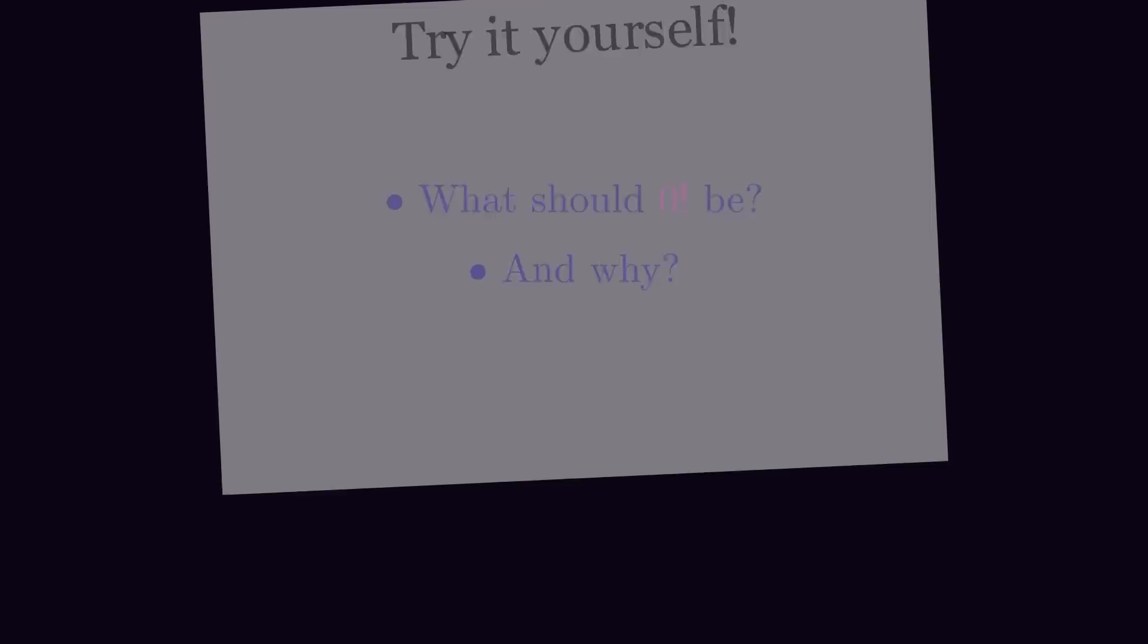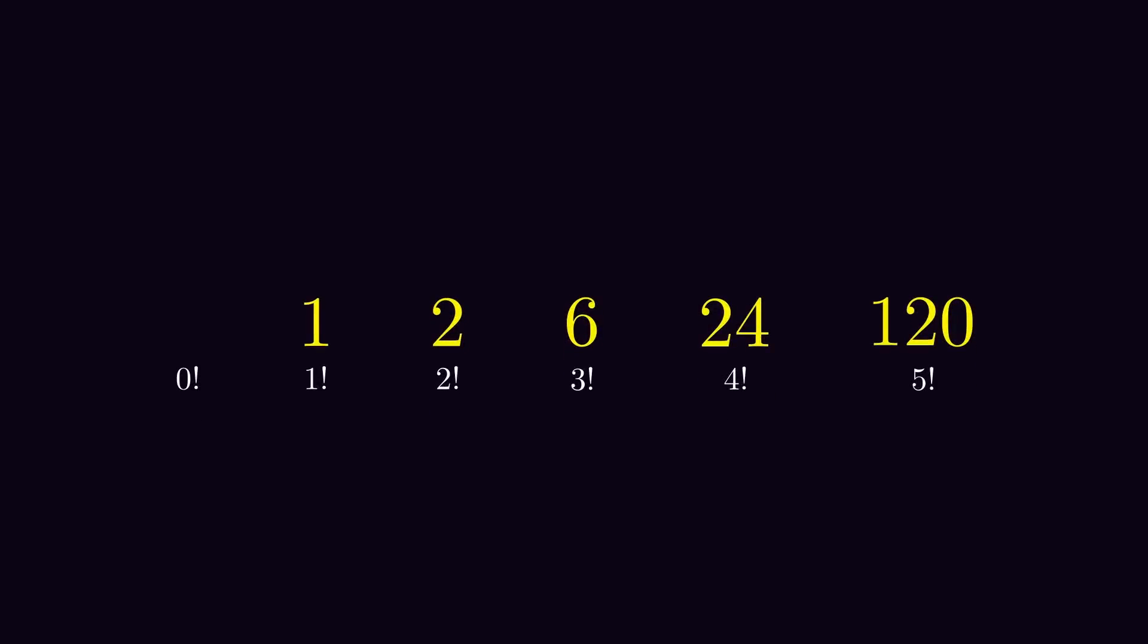If you take a look at the pattern the factorial makes when you plug in the first natural numbers, you can see that to get from 1 factorial to 2 factorial, you multiply by 2. To then get to 3 factorial, you multiply by 3. Then by 4, 5 and so on. You can even see this in the definition.